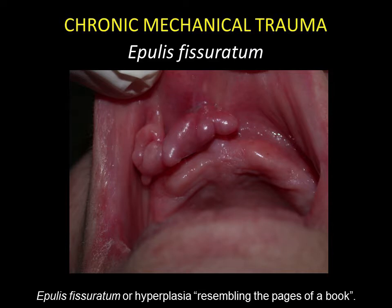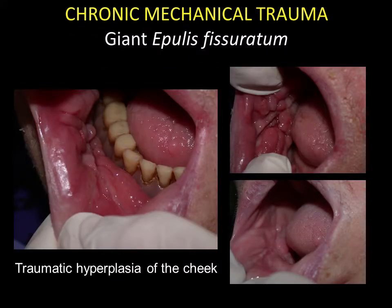Epulis fissuratum is also a hyperplastic traumatic lesion caused by instability of a prosthesis. It is also known as epulis or hyperplasia resembling the pages of a book. Epulis fissuratum may assume enormous proportions where there is a marked instability of a prosthesis. Here we see numerous nodules on the cheek caused by an unstable prosthesis. Ceasing to wear the prosthesis for two months allowed the lesions to heal.